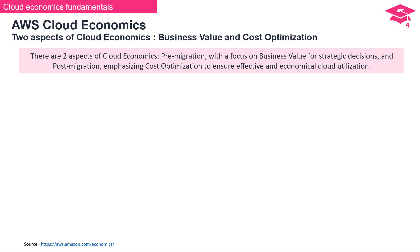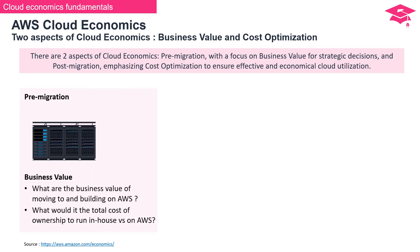Let's talk about cloud economics. AWS breaks it down into two main parts. First up, we've got the pre-migration stuff. Think business value and total cost of ownership, TCO. It's like checking out how things look from AWS's point of view before diving into the cloud — a bit like window shopping, but for tech.